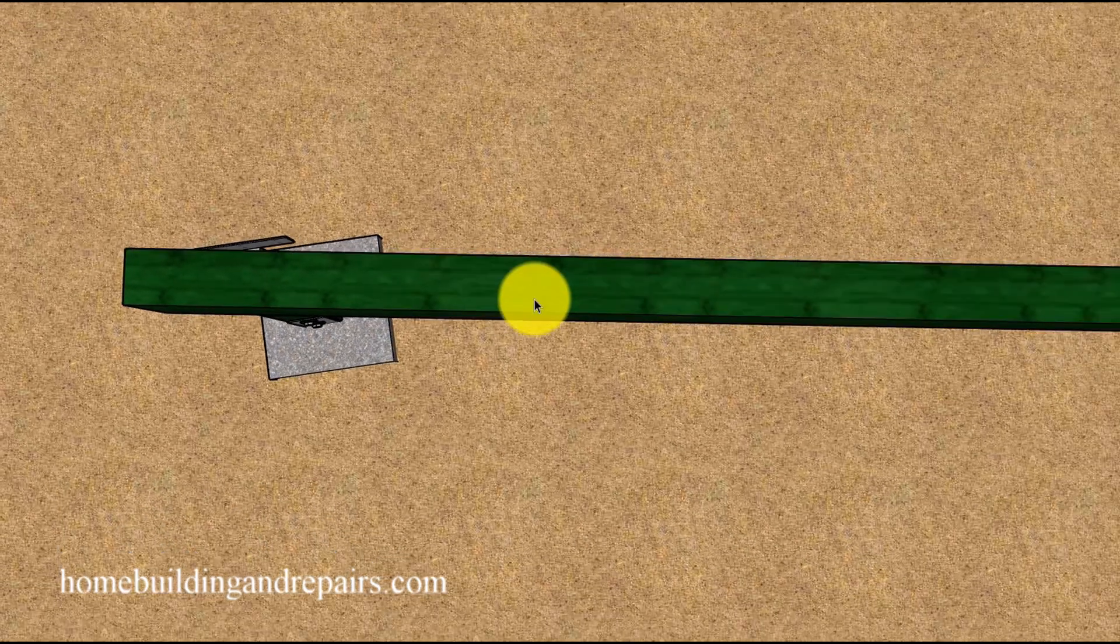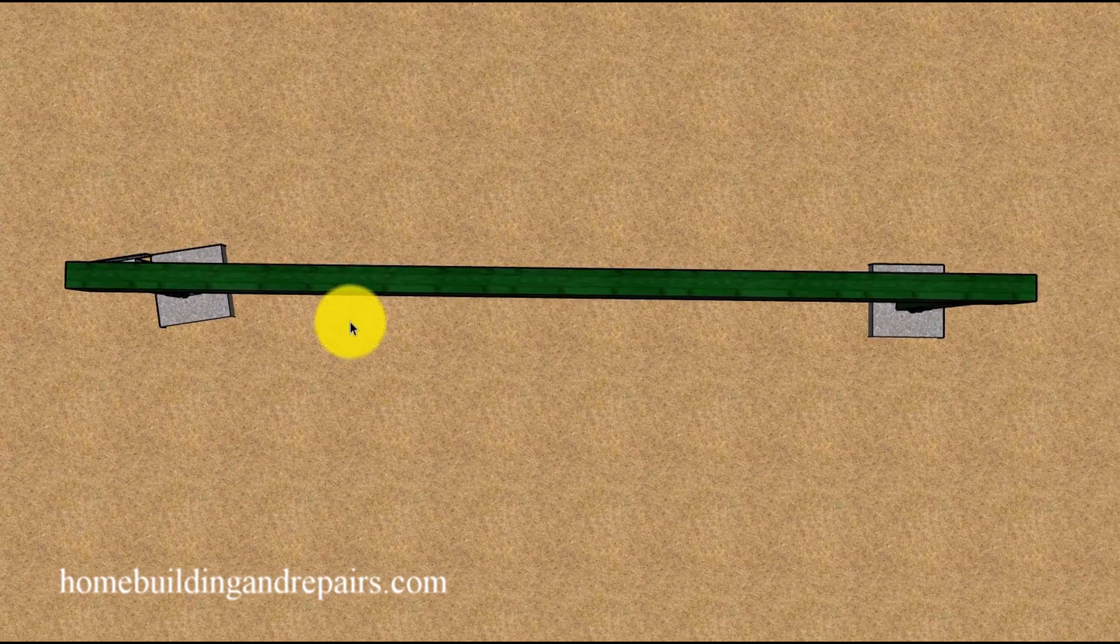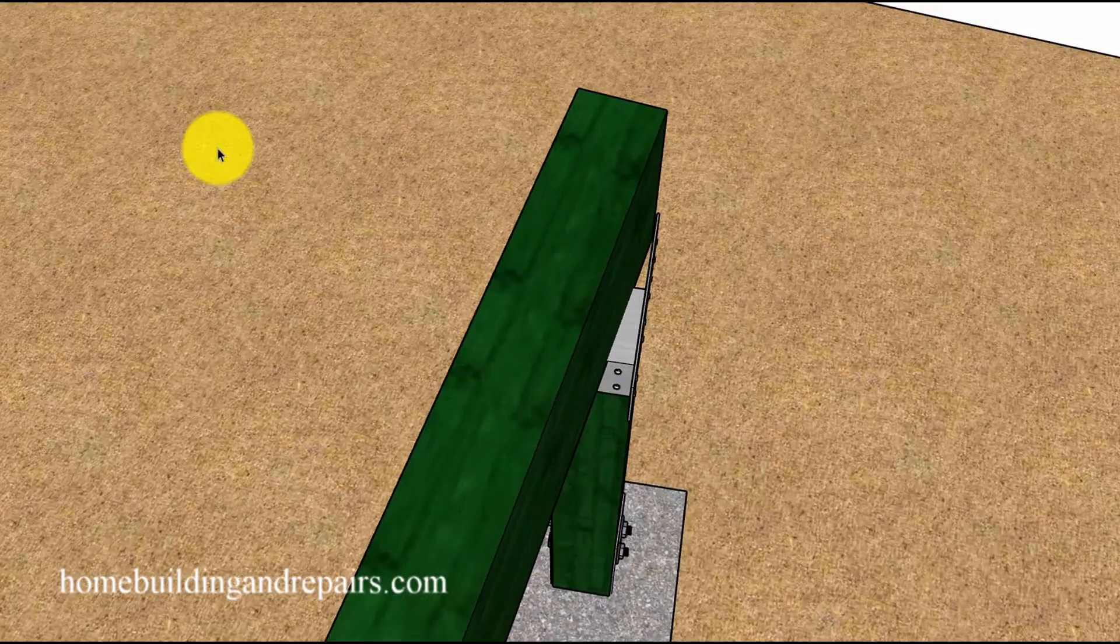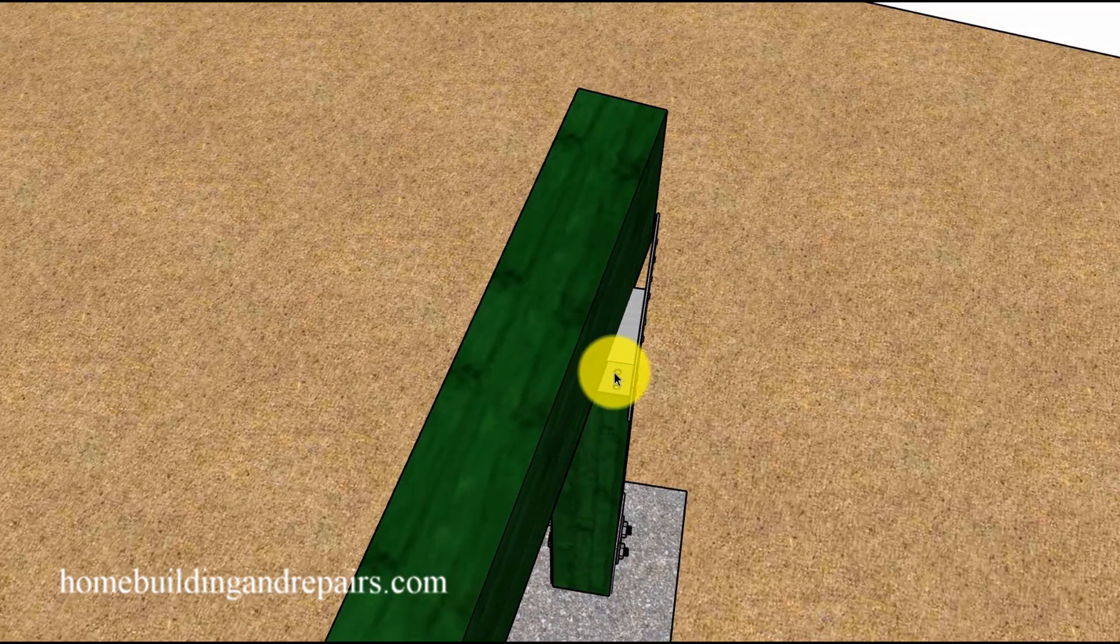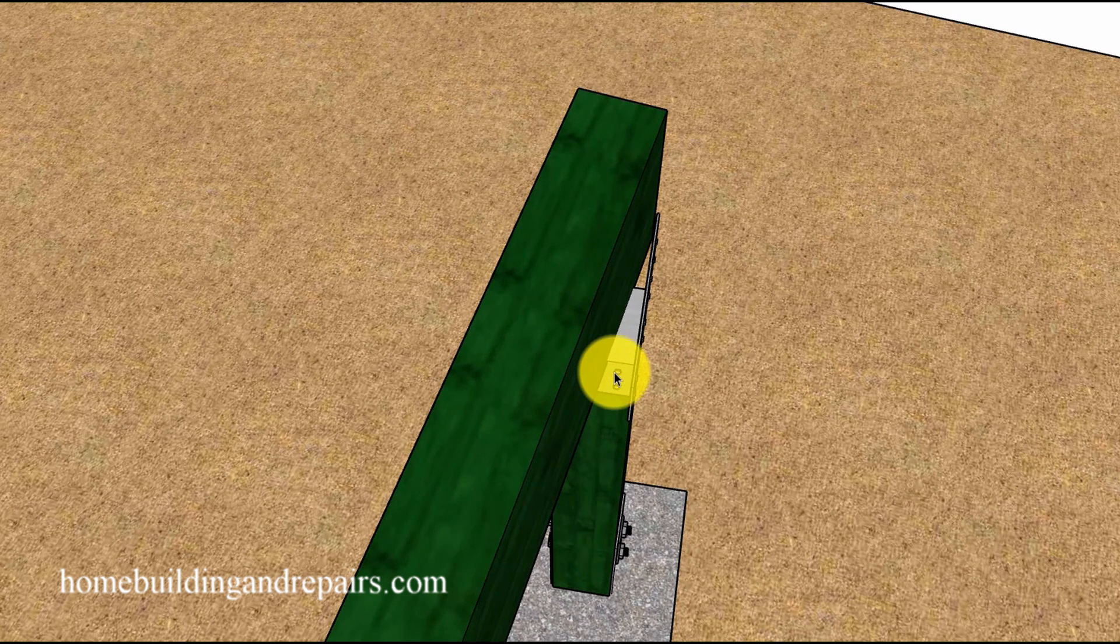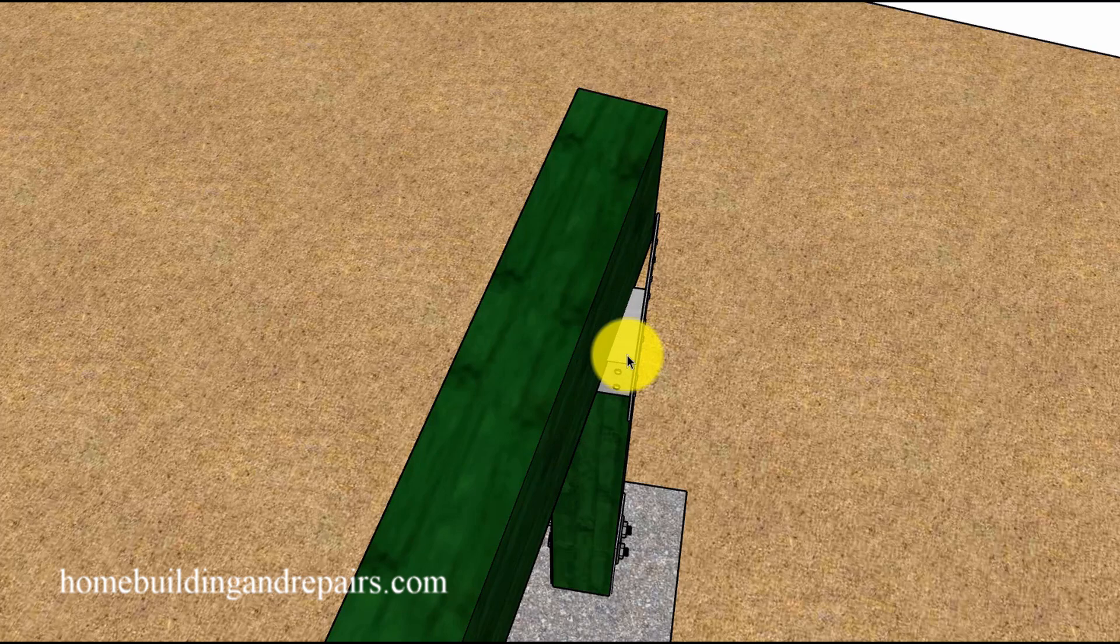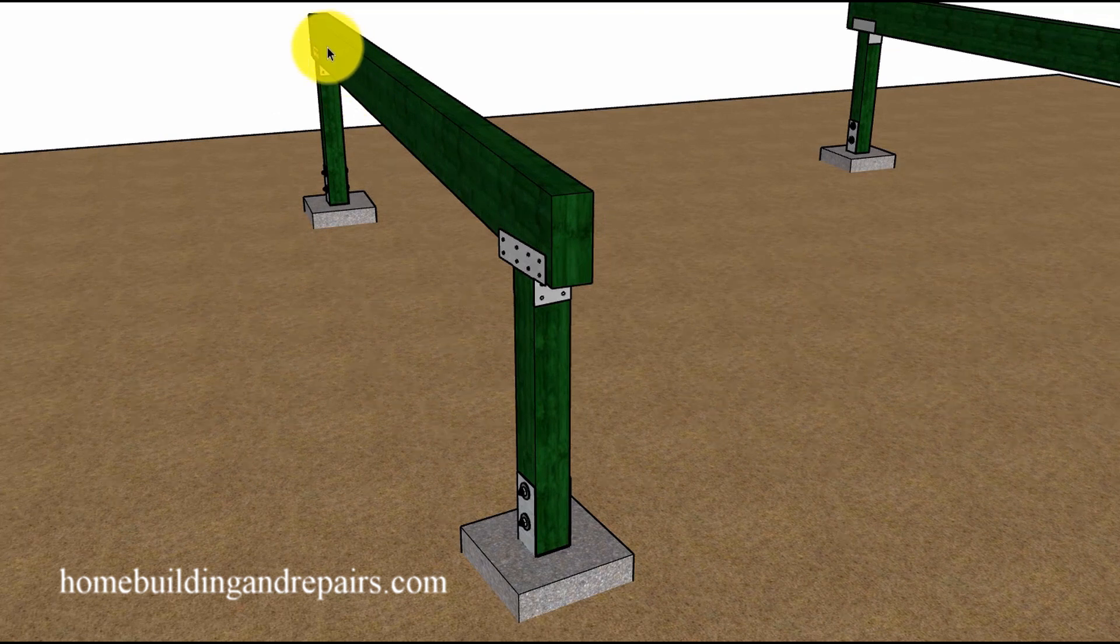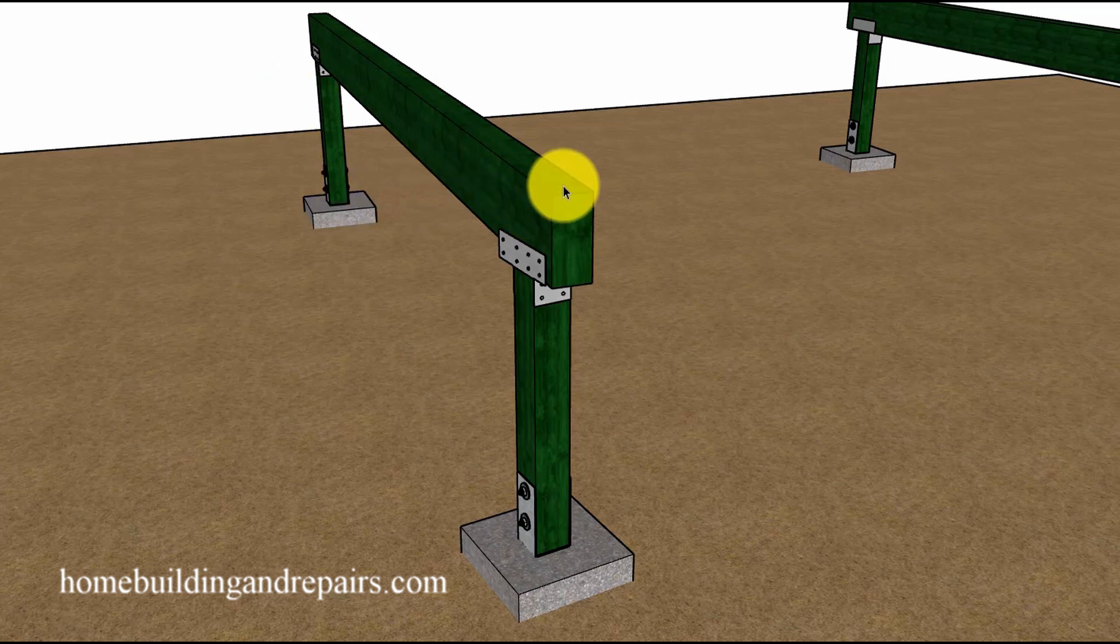Now I went ahead and blew this a little out of proportion here because there's a good chance you're not going to be off this far. However, if you're off about a quarter of an inch, you could have a difficult time setting the post and the post to beam connector. I'm not saying you can't do it because all you really need to do is set the beam in the pocket that's off a little bit first, then pull the beam over and set it into the pocket where it's going to be straighter.